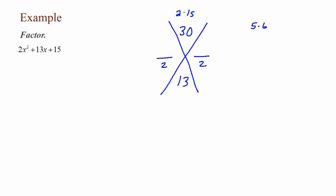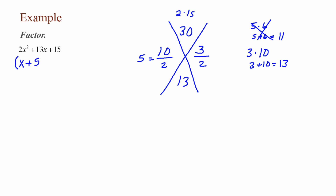Trying 5 times 6: 5 plus 6 is 11 — that doesn't work. Trying 3 times 10: 3 plus 10 is 13 — that works. 10 over 2 reduces to 5; 3 over 2 does not reduce. So in one parenthesis I have (x plus 5), and in the other, (2x plus 3). The final answer is (x plus 5)(2x plus 3). It doesn't matter which parenthesis comes first, as long as the 2 and 3 are together and the 1 and 5 are together.